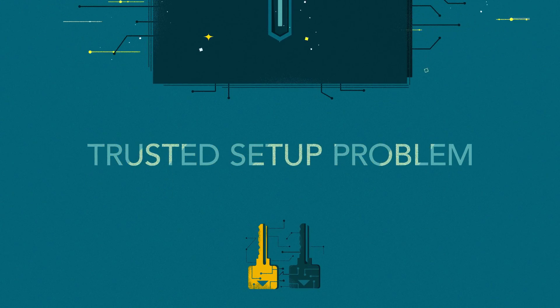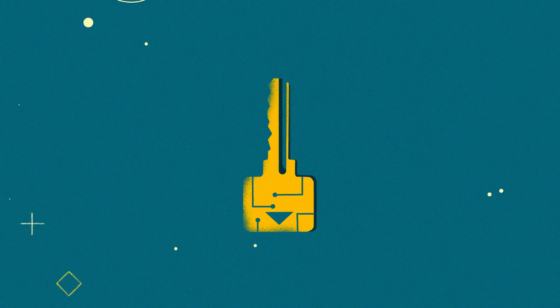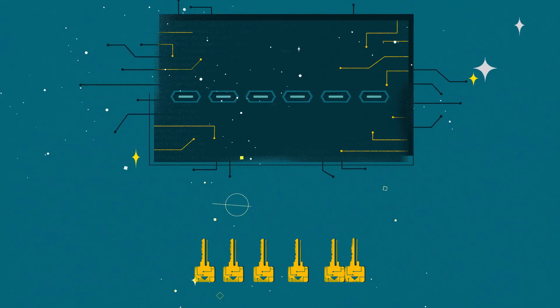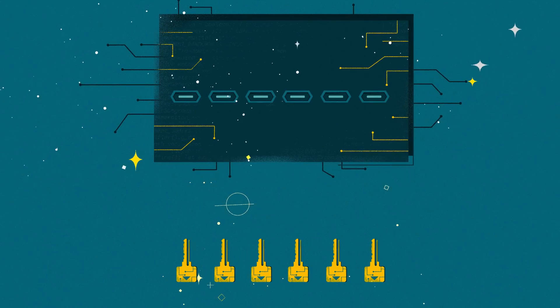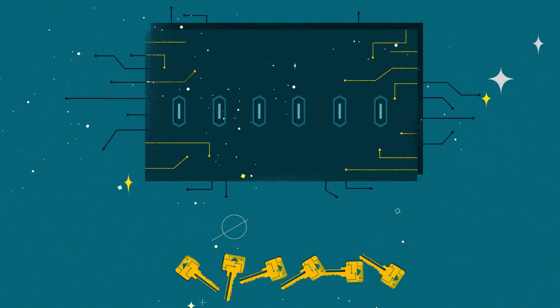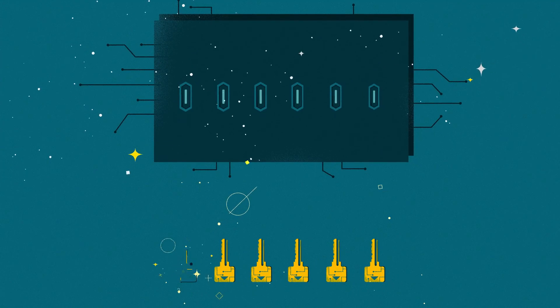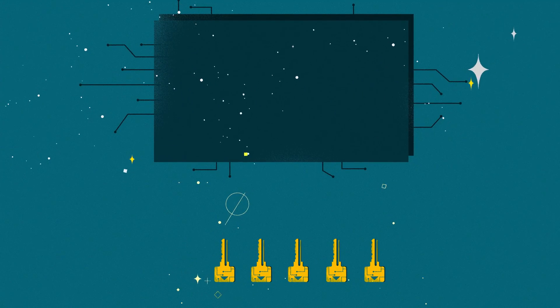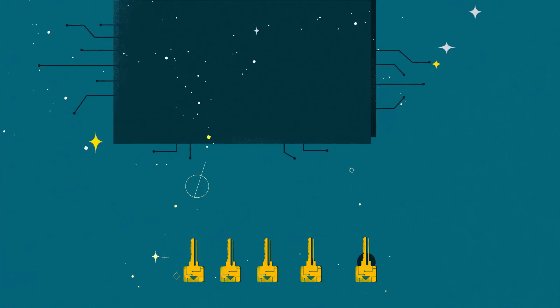In order to launch Zcash, the team devised a way to pull off the trusted setup as safely as possible. One way to mitigate having to trust one person is to trust that at least one of many people did the computation correctly. By involving multiple people, they divided the control. Instead of just one key locking the code, there would need to be six. And as long as just one of those six people destroyed their key after the setup, Zcash would be launched successfully.